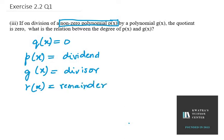In this case, we are given Q(x) equals 0. We need to find the relation between the degree of P(x) and G(x). The degree of G(x) must be greater than the degree of P(x).